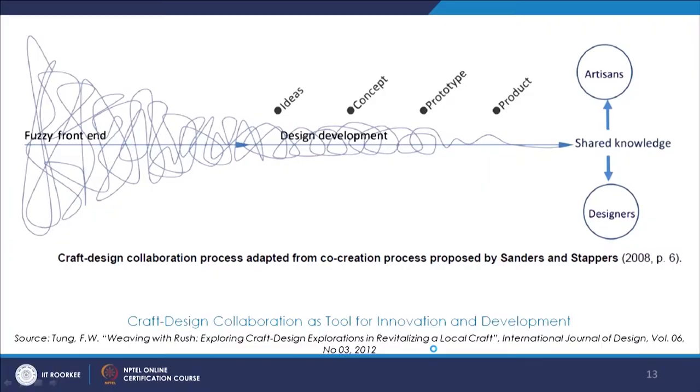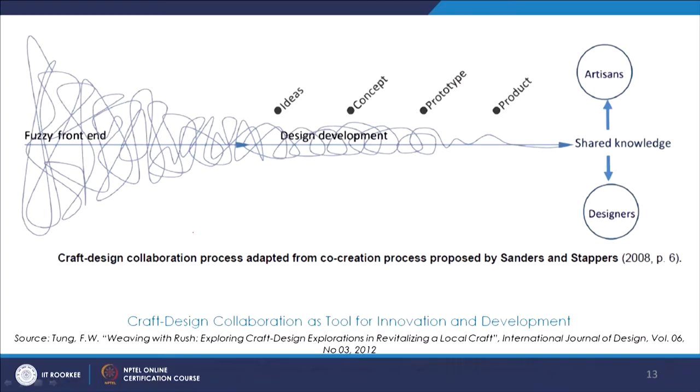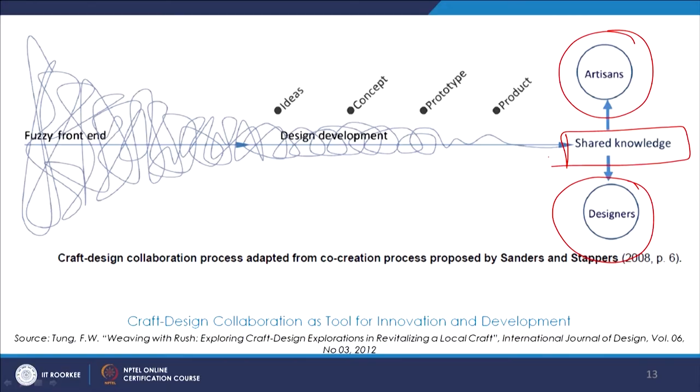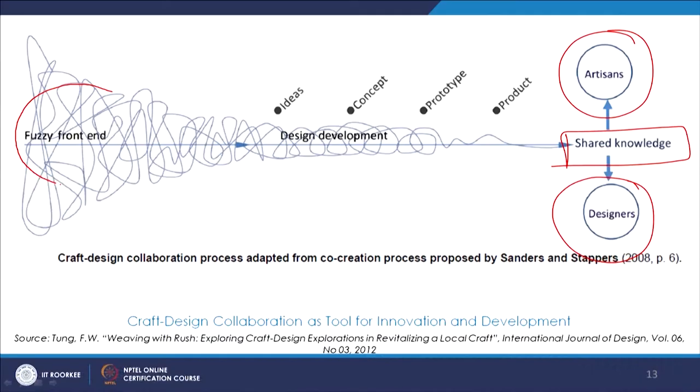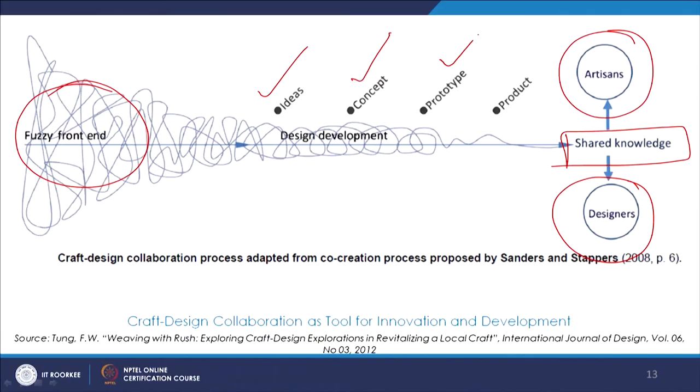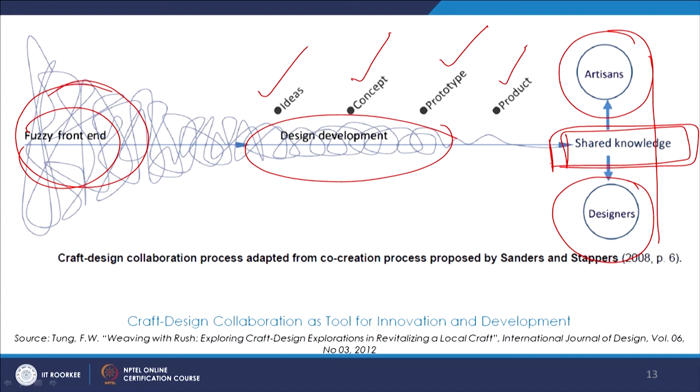This we saw already in a few previous modules but because it is very relevant when talking about the craft design process, it is being revisited. That is how collaboration between artisans and designers works — this craft design process and the shared knowledge generated when both come together. In the beginning there is a fuzzy idea of some creation and some output, and then on the way there are sets of ideas that come into picture, concept development, prototype, and final product. Through this shared knowledge and design development, a certain output is achieved as the result of this collaborative craft design process.